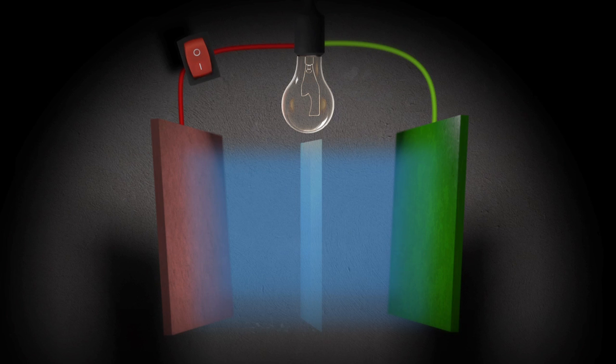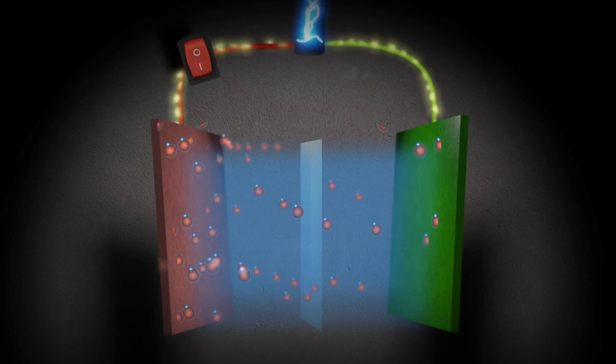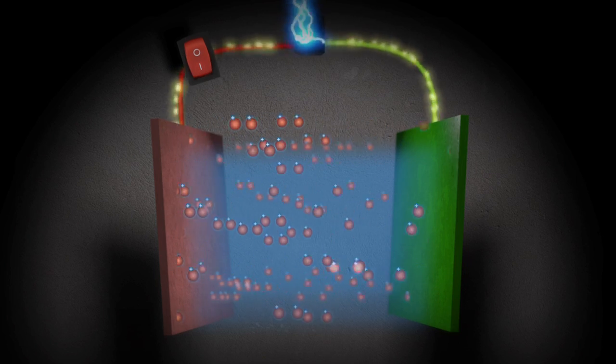To recharge the battery, you just do things in reverse. Instead of a circuit, you're putting an energy that forces the electrons back into material A. The ions then leave material B and rejoin their lost electrons. And the battery is ready to discharge again.